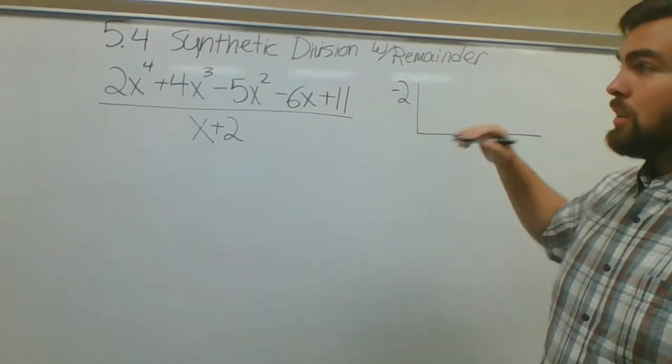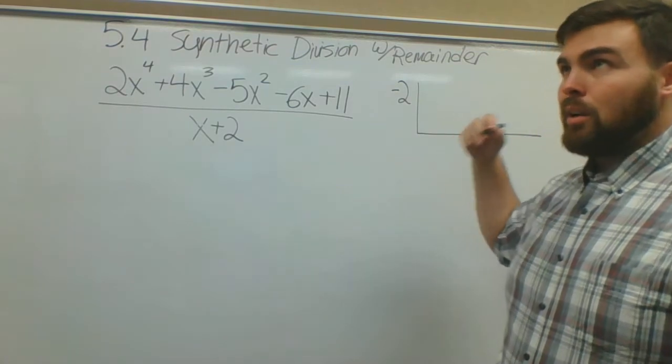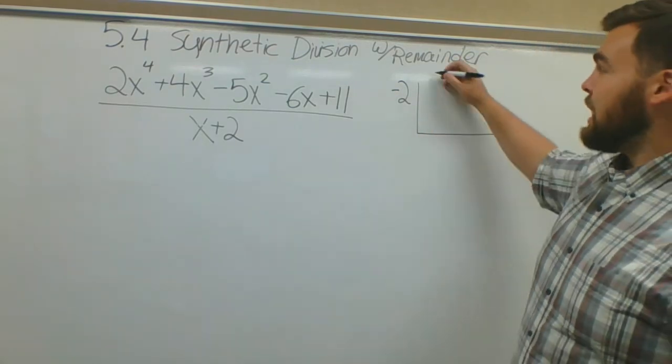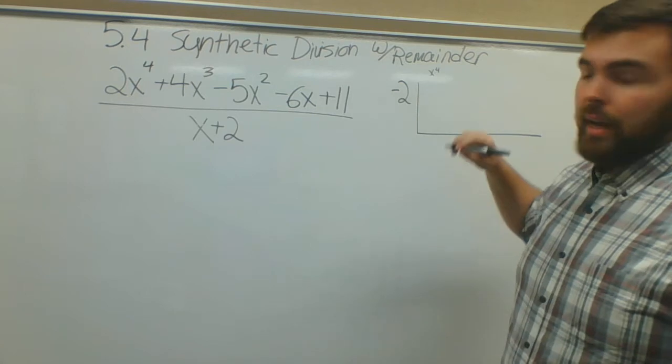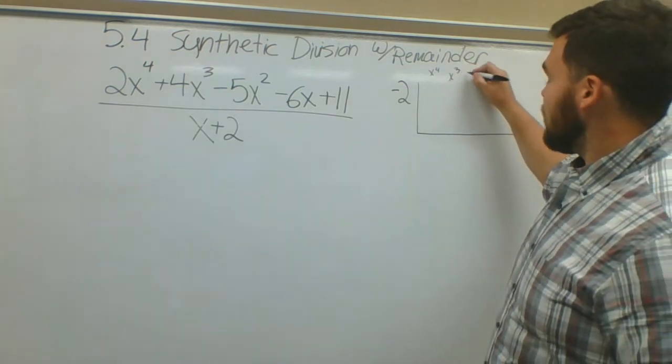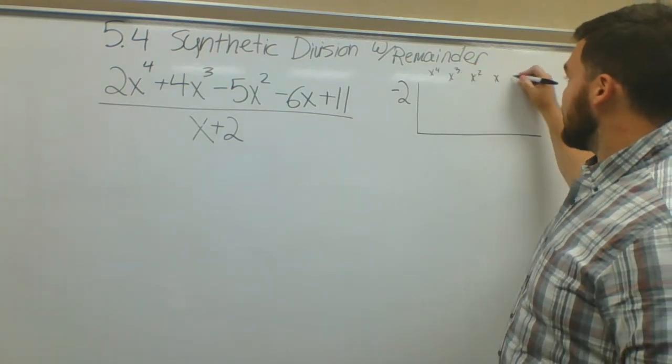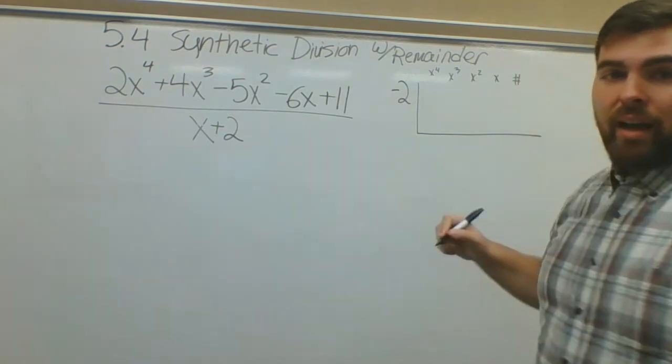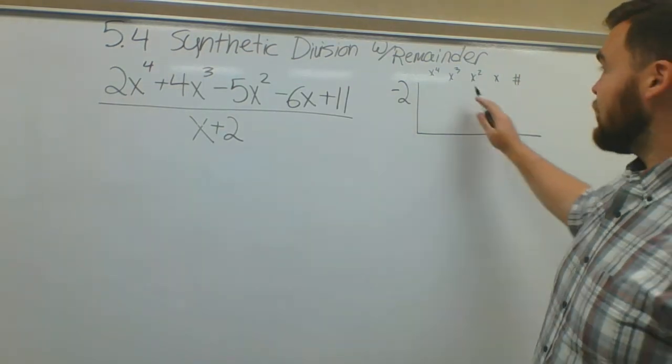Once I do that, I want to put in my coefficients. One thing to make sure you're doing correctly, especially with these bigger problems, is having something for every term. If you want to write this up top: x to the fourth, x to the third, x squared, x, constant, that's fine. You should have something for every single term there.